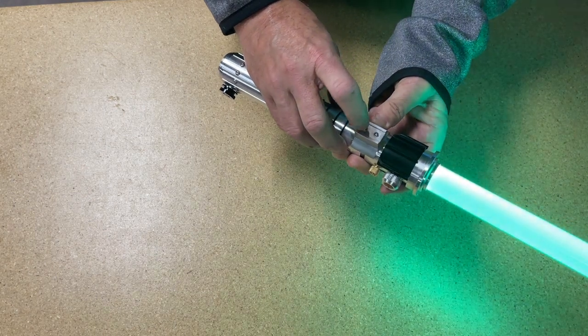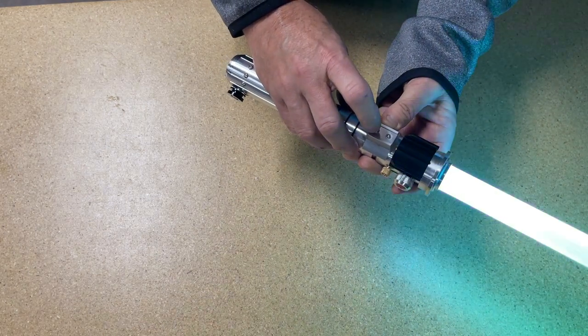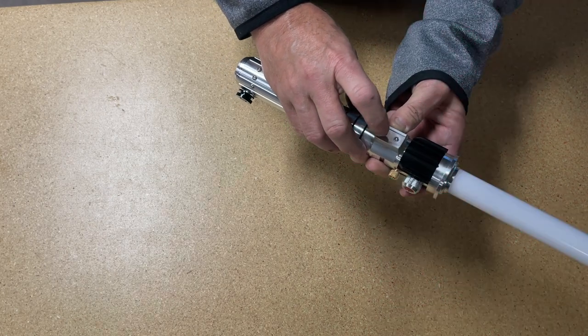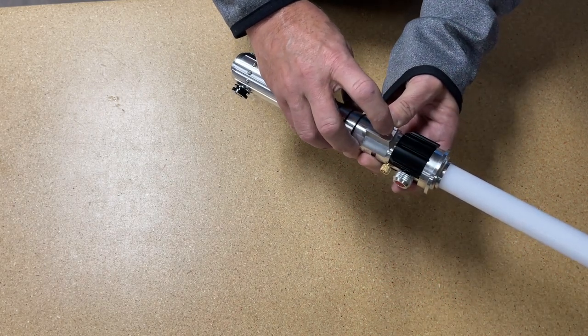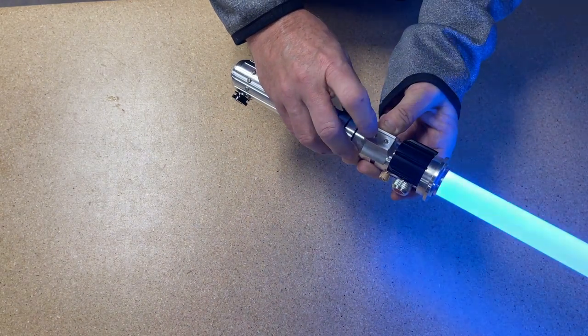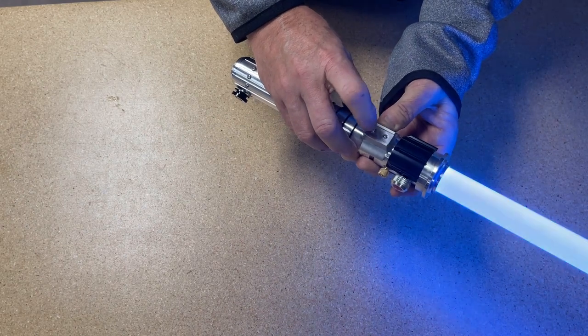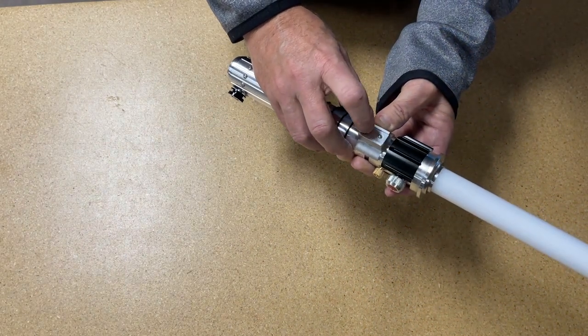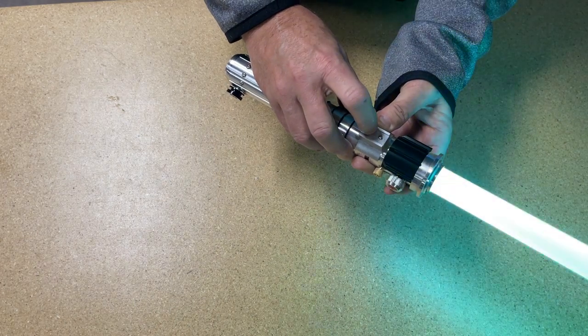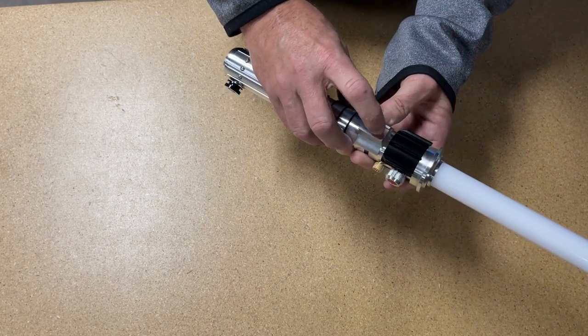So we have a green blade for those who want Luke Skywalker because Luke Skywalker and Mara Jade are together. Obi-Wan Kenobi. I'll never turn to the dark side. We got some green blades on there.